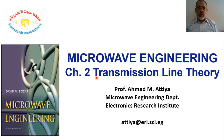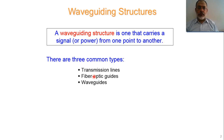In Electromagnetic Waves, we have two main problems: Guided Wave Problems and Radiated Wave Problems. In Guided Wave Problems, the Electromagnetic Waves are guided by a Wave Guiding Structure, and the definition of a Wave Guiding Structure is one that carries a signal or power from one point to another. We have three main types of Wave Guiding Structures: Simple Transmission Lines, Wave Guides, and Optical Fibers.